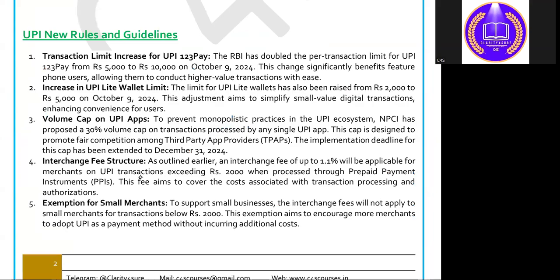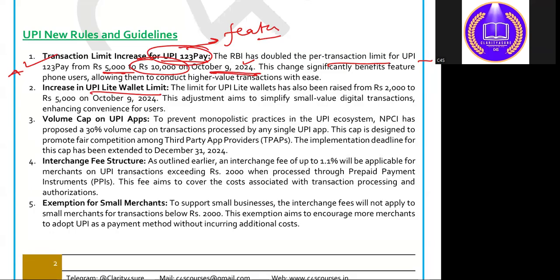Now let's look at some new rules and guidelines regarding UPI updates by NPCI and RBI. Transaction limit increase for UPI123Pay — for featured phones, not smartphones. RBI has doubled the per-transaction limit for UPI123Pay from 5,000 to 10,000, effective 9th October 2022. Also, the UPI Light wallet limit has been increased from 2,000 to 5,000.